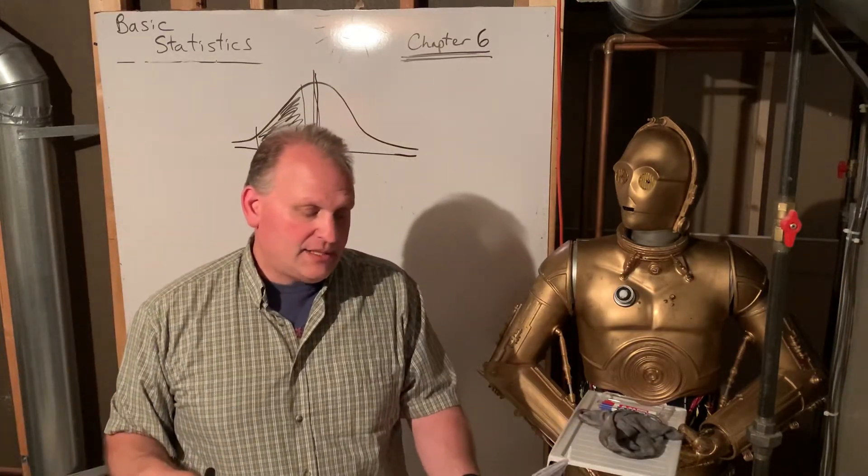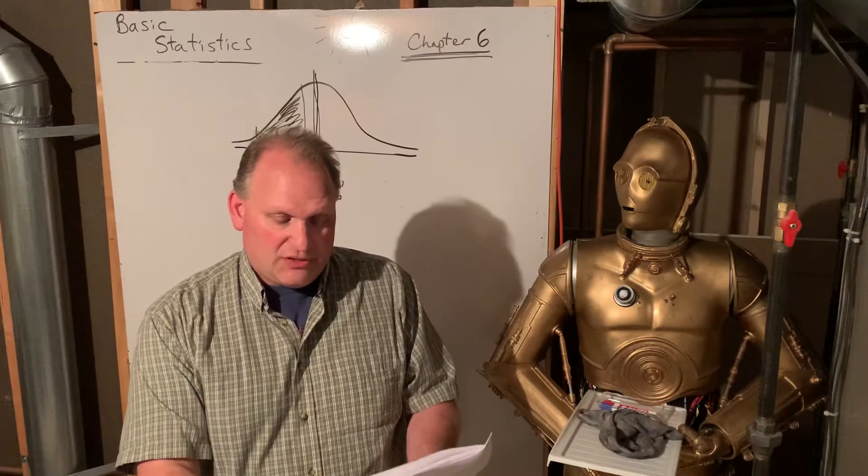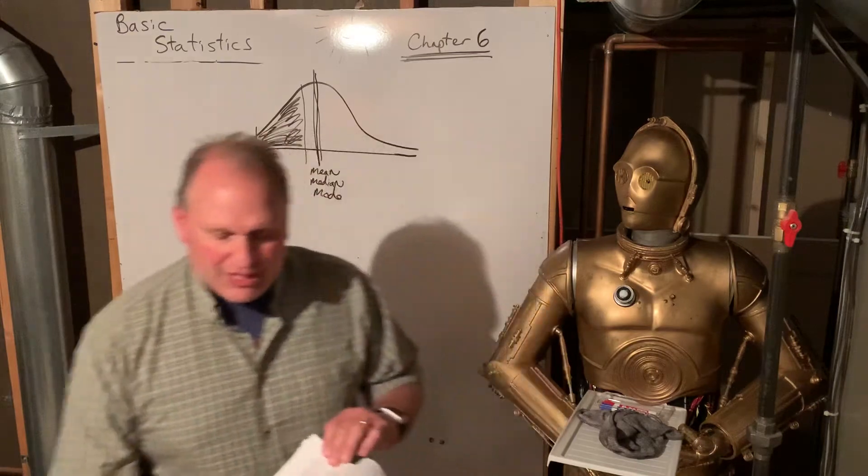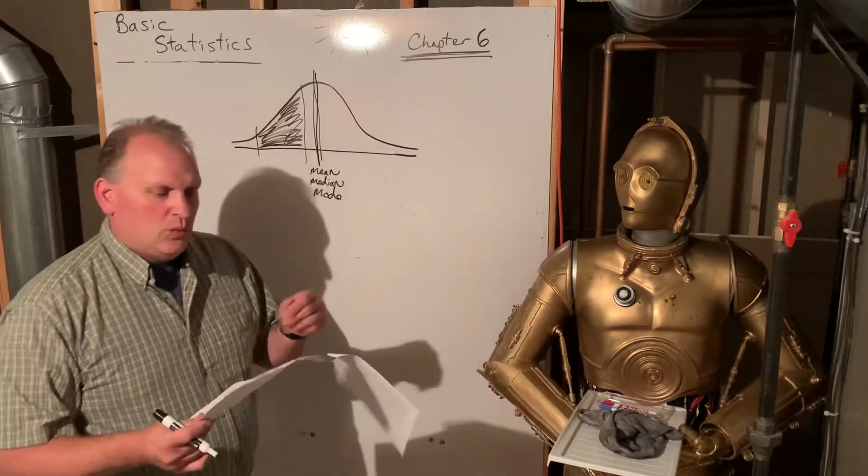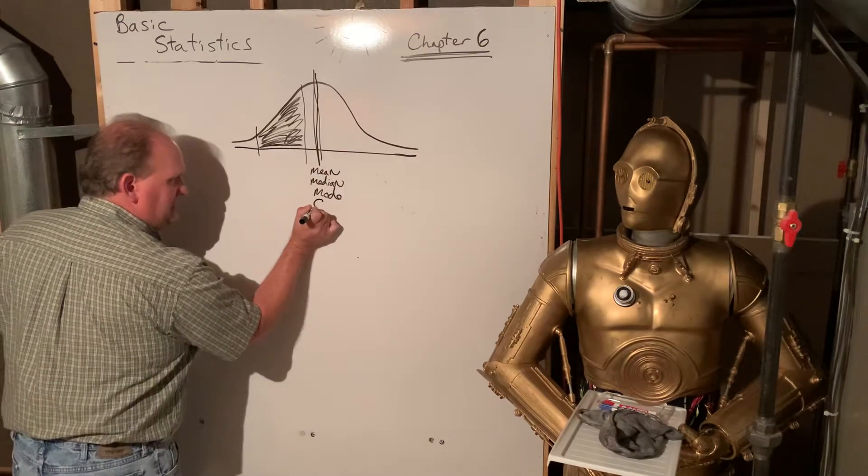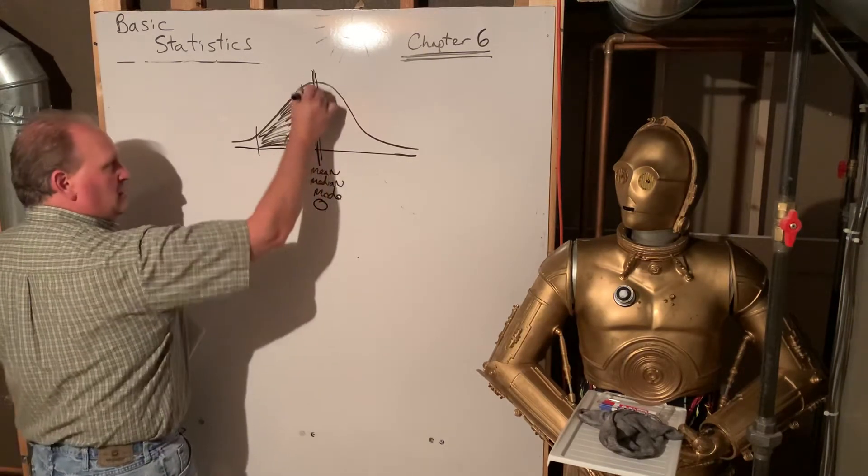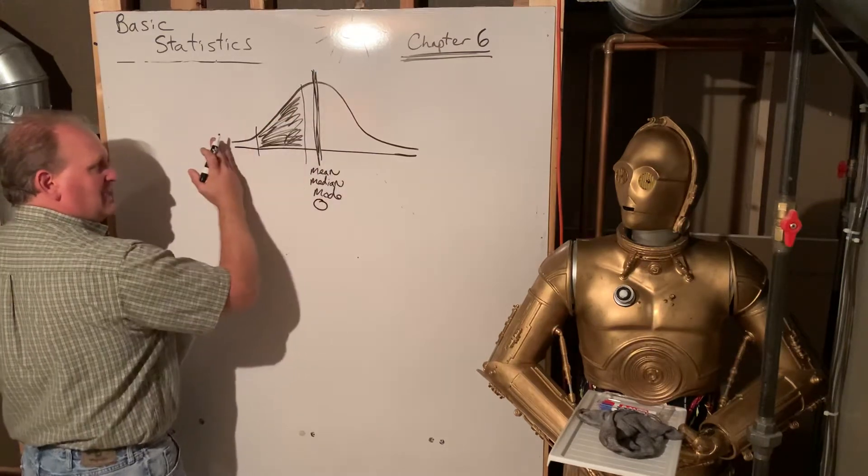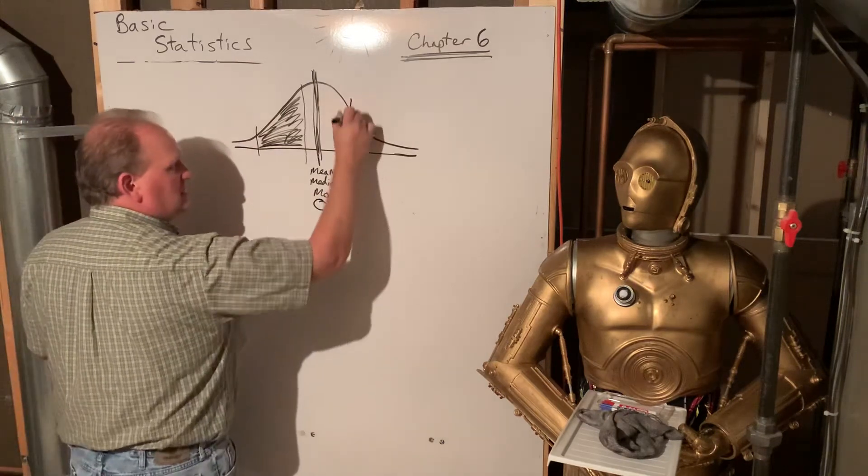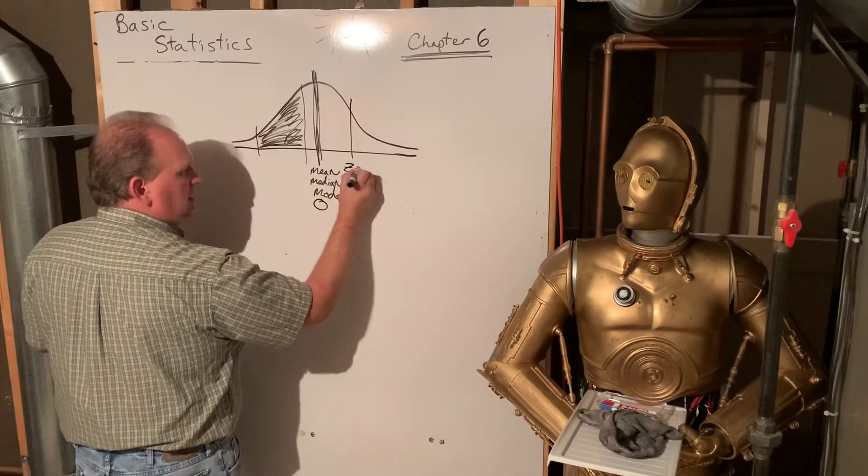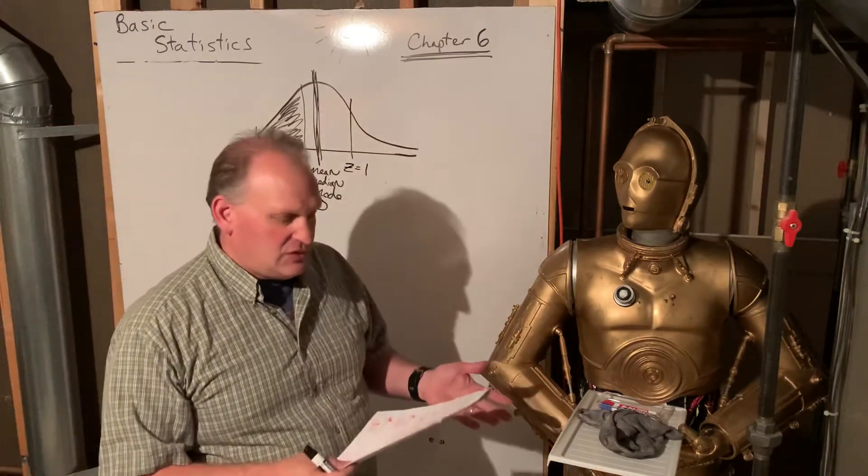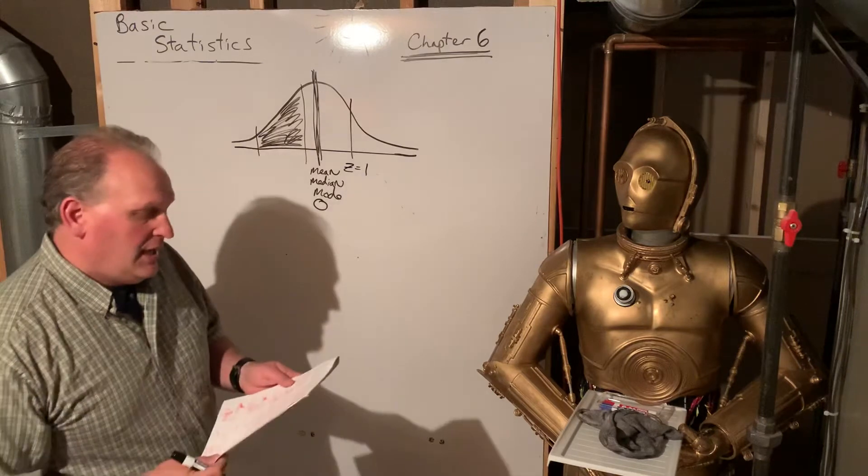Alright. A standard normal distribution is a normal distribution with a mean of zero and a standard deviation of one. And so when we talk about z-scores, we're putting things into a standard normal curve where the mean is zero. And then that means that cuts it into 50% below and 50% above. And z-scores are standard deviations. Like one standard deviation above the mean, two standard deviations above the mean, three, and so on.